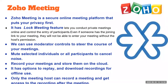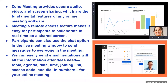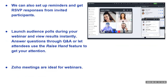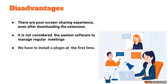Zoho is another very upcoming platform where your privacy is given greatest priority. You have complete moderation and control of the entire meeting. You can record meetings and it has secure audio and video, remote access, and a chat option. You can send email invitations with topic, agenda, date, and time included. It also has polling, Q&A, and a raise-the-hand option.